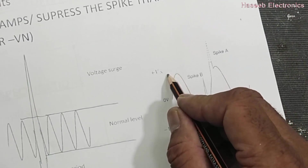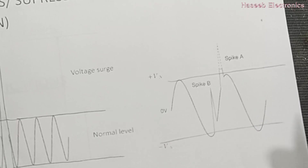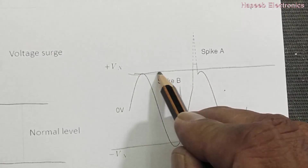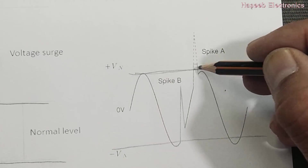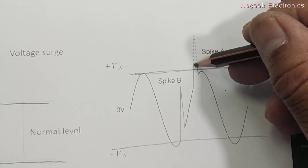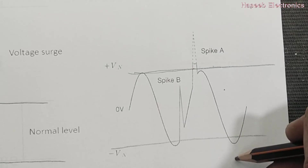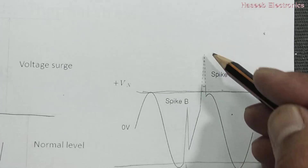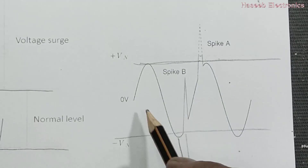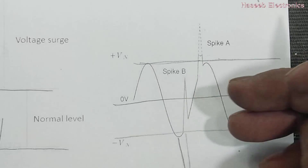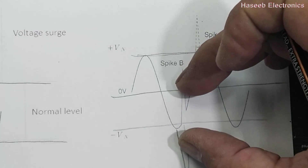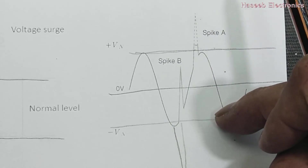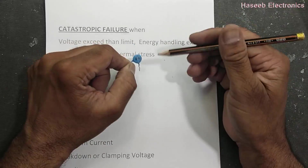In this example we have two spikes: spike A and spike B. This is our normal level. Any spike above the normal level — from the upper side or lower side — will be clamped. For example at 250 volt, the upper voltage or lower voltage will be clamped by this component.